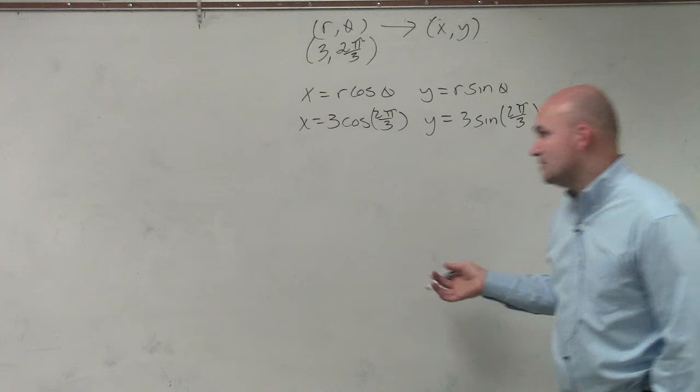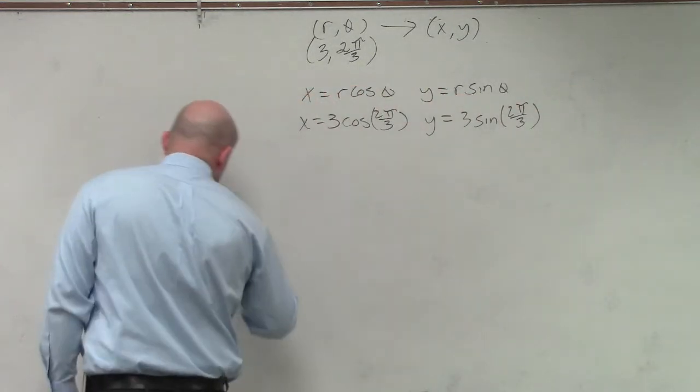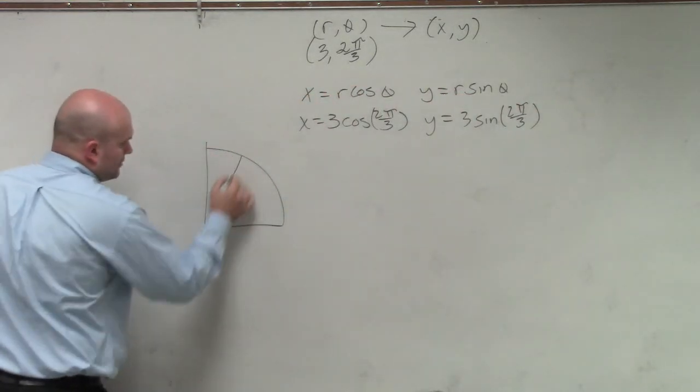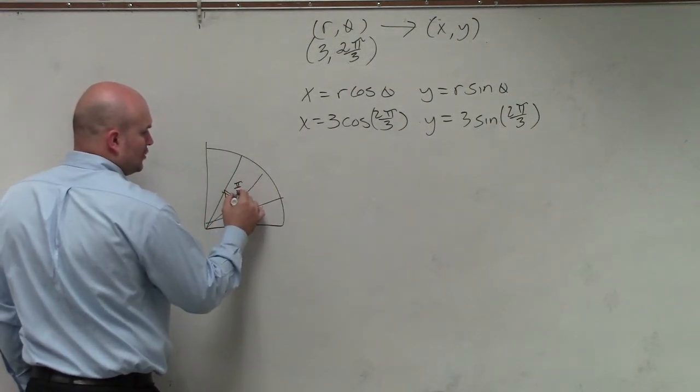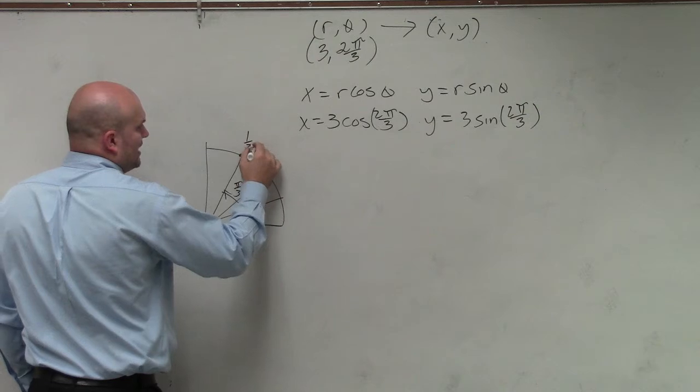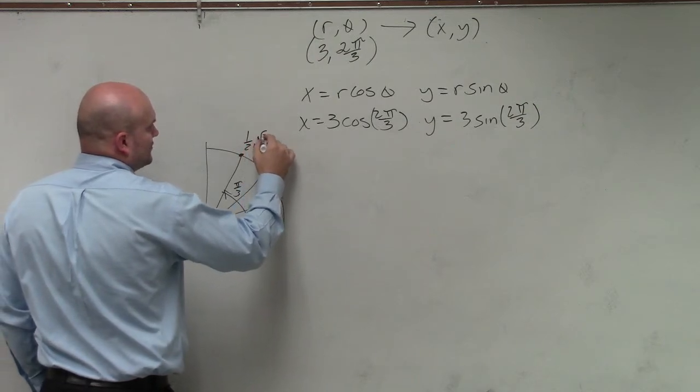Well, how do you evaluate these? Well, again, going back to our unit circle. Here's pi over 3. What is that coordinate point? 1 half comma square root of 3 over 2.